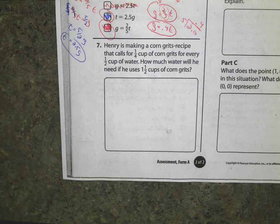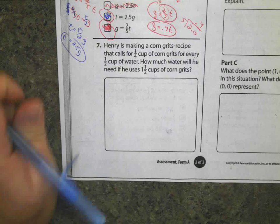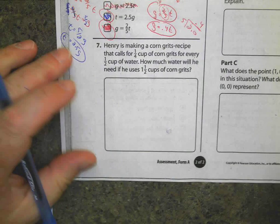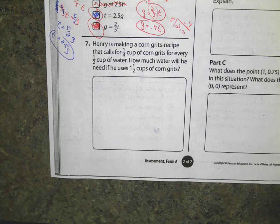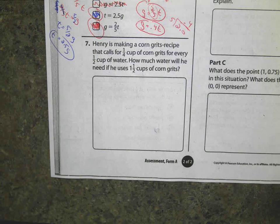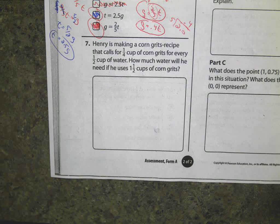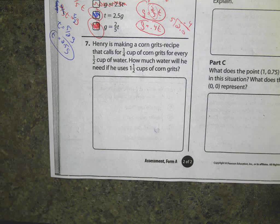Okay, after talking it over, we decided that there's a couple different ways to do this question. So it's going to be your choice tomorrow when you see this on your test. It says, Henry is making a corn grits recipe that calls for a quarter cup of corn grits for every half cup of water. How much water will he need if he uses one and a half cups of corn grits?